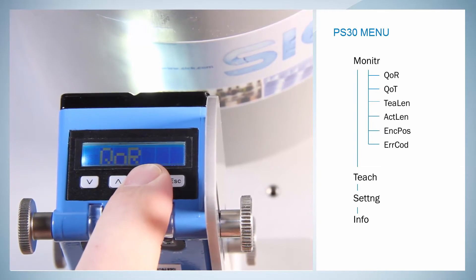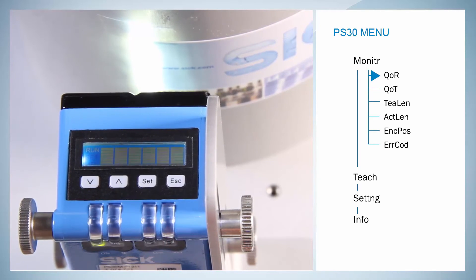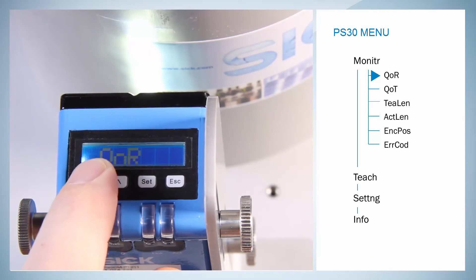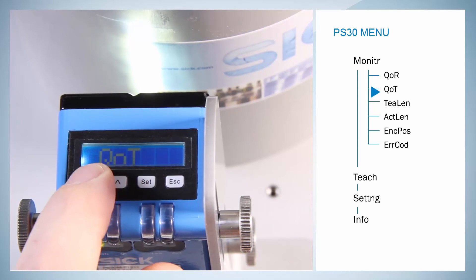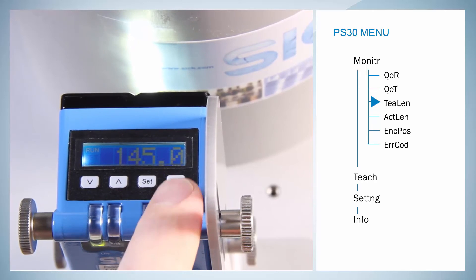The item Monitoring allows to check and read out the current sensor settings such as Quality of Run, which shows the quality of run in up to 6 bars, the quality of Teach, which shows the quality of Teach in up to 6 bars, and the Teach length, which shows the length of the label which has been taught in.